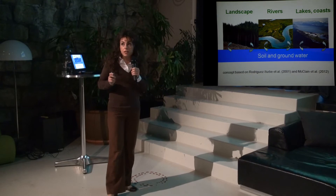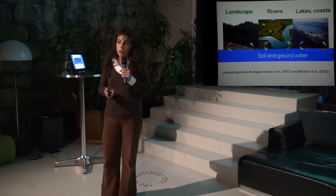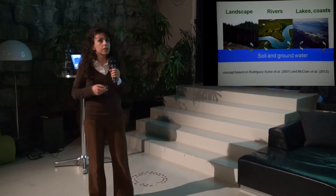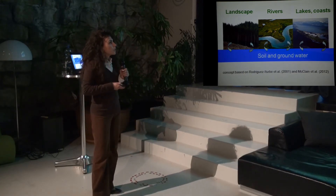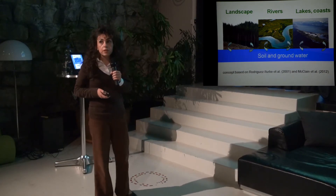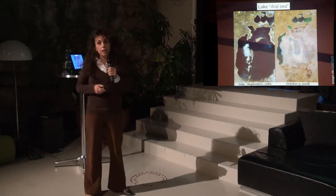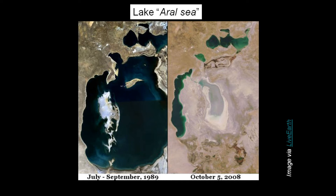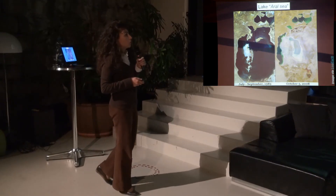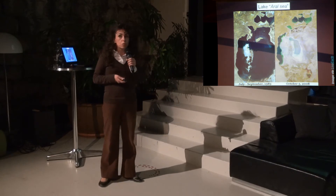These three spheres are interconnected with each other, and when there is an alteration in one of them, there will be a feedback in the others. Let me show you a well-known example of an alteration in flows in the lakes: the Aral Sea, located in Central Asia. This lake was the fourth biggest lake in the world, and now it's reduced to only 10% of its original size because of water use for agricultural purposes.